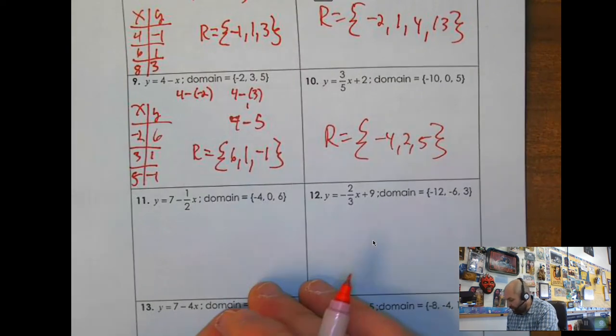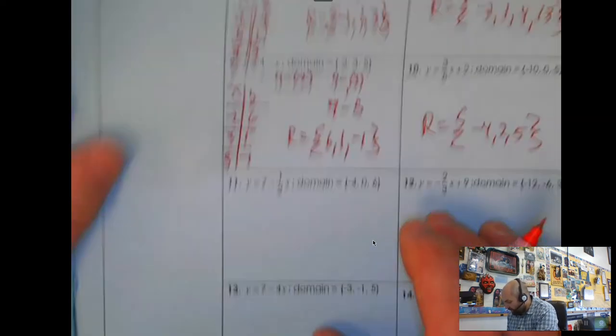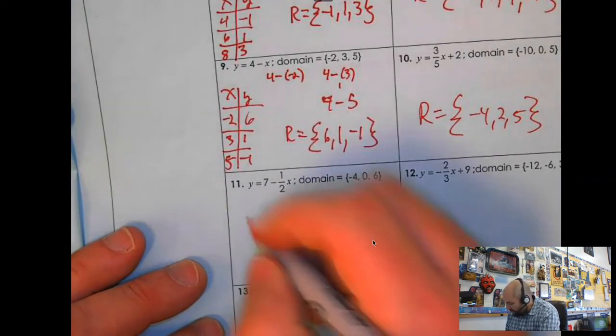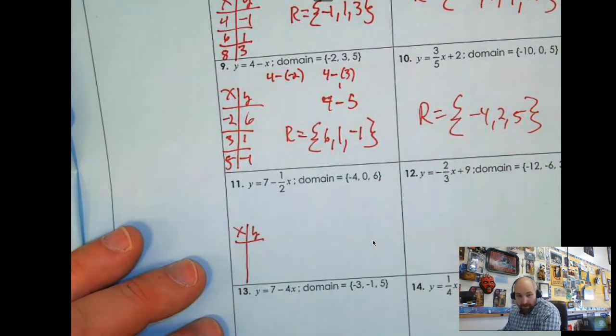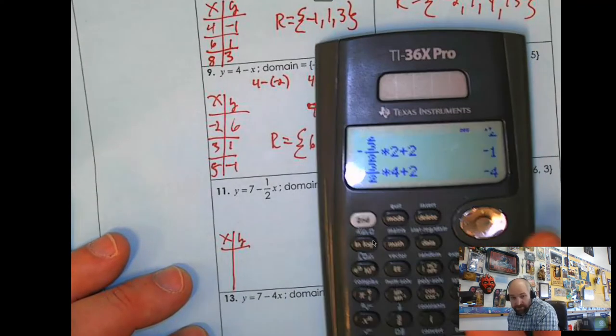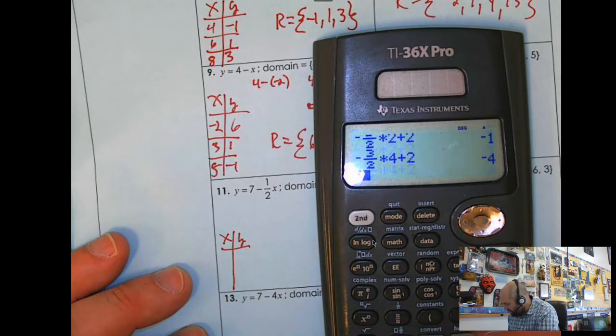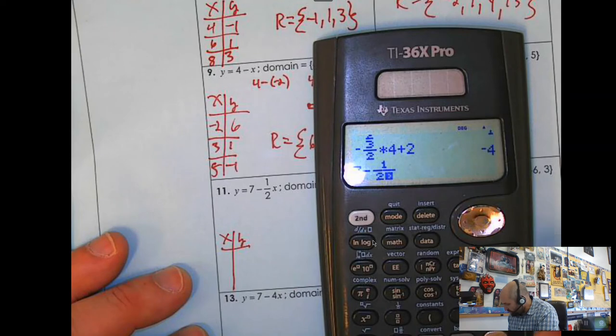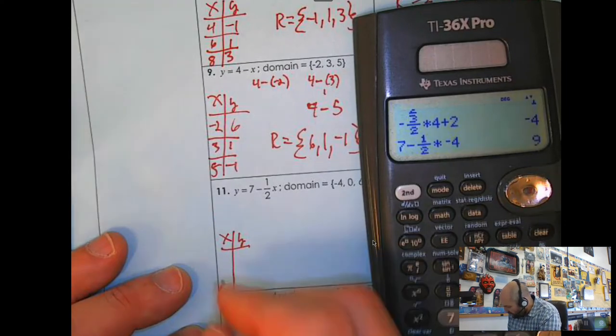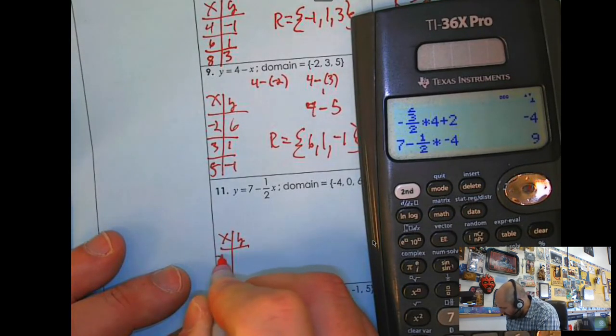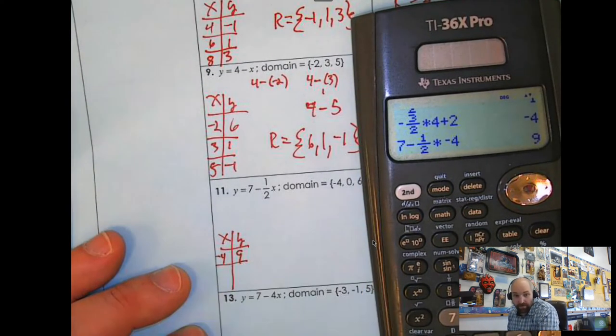All right, let's take a look at number 11. Number 11, you kind of do the same exact thing. Here's my x, here's my y. So what I'm going to do is use my calculator because it's got fractions. So I'm going to do 7 minus 1 over 2 times negative 4. It gives me 9. So if I plug in negative 4, I get an output of 9.